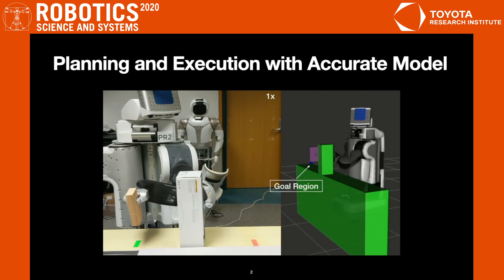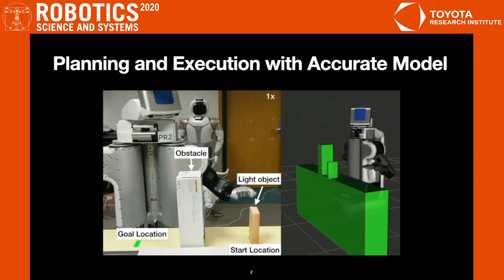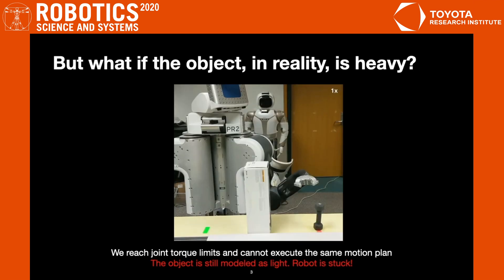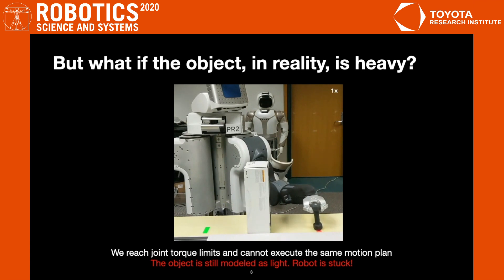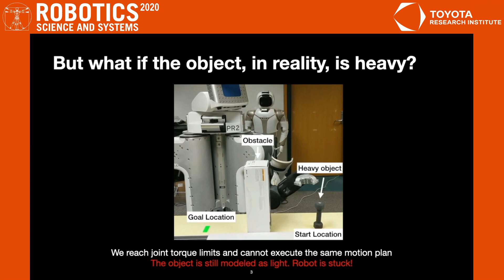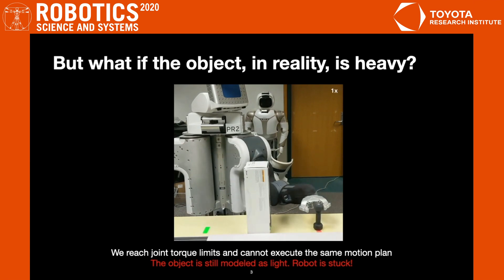However, what if the object to be picked up is heavy in reality? In other words, what if the dynamical model was inaccurate? Since the object is modeled as light, the planner comes up with the same plan like before. However, upon executing it, the robot cannot lift the object beyond a certain height as its joint torque limits are met and the arm is stuck. Thus, our execution fails due to the inaccuracy of the model.